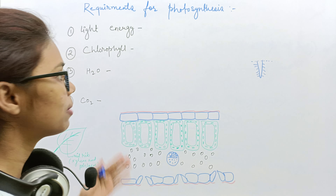Plants trap the light from the sun and convert it into chemical energy. The second requirement is chlorophyll. It is a green pigment which is present inside the chloroplast. Chloroplast is a special cell organelle which is present only in plant cells. We also call it the kitchen of the cell, because chloroplast is the cell organelle where the process of photosynthesis takes place.